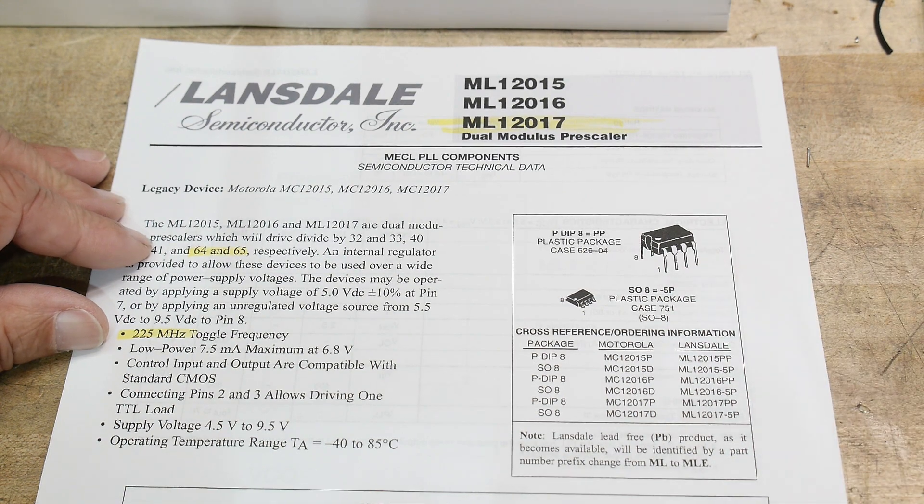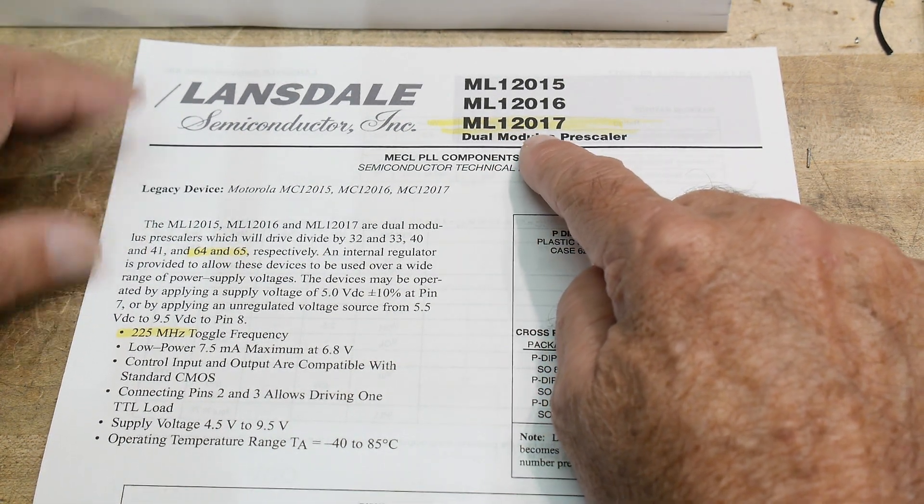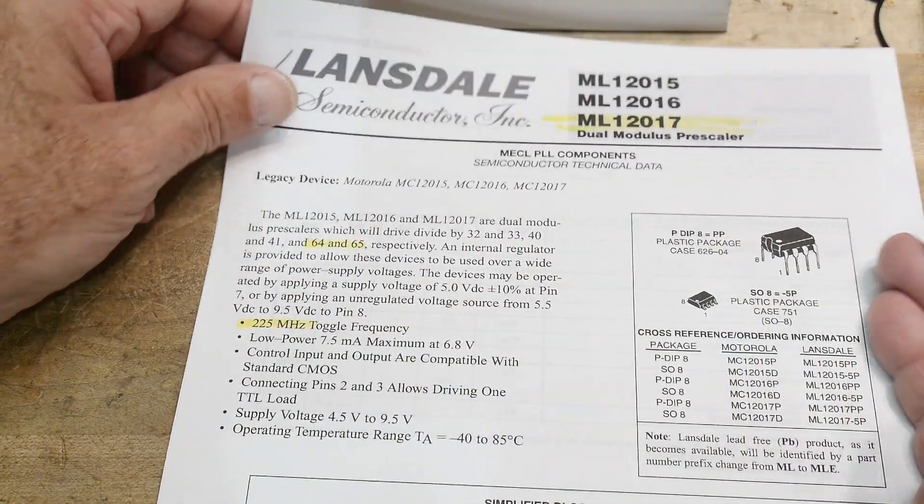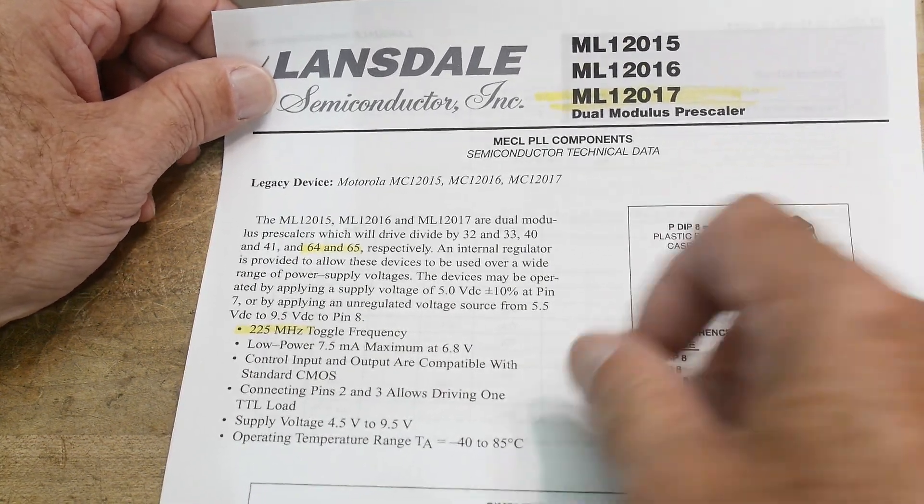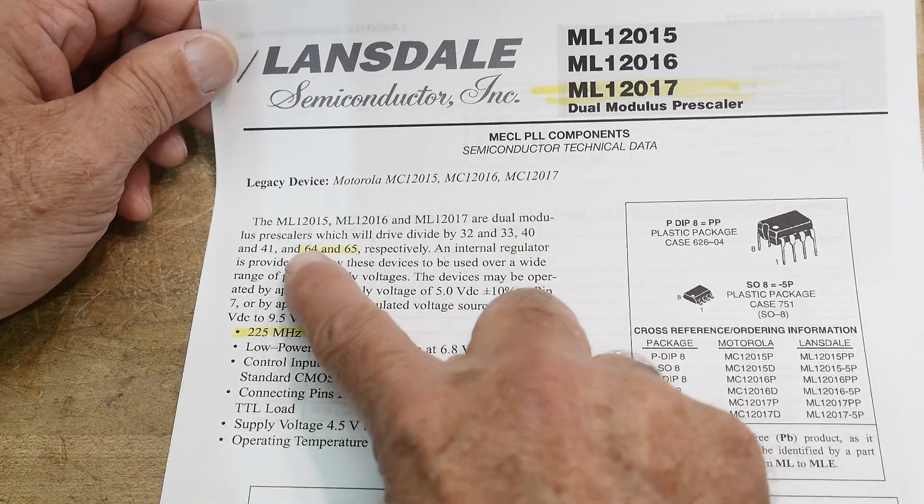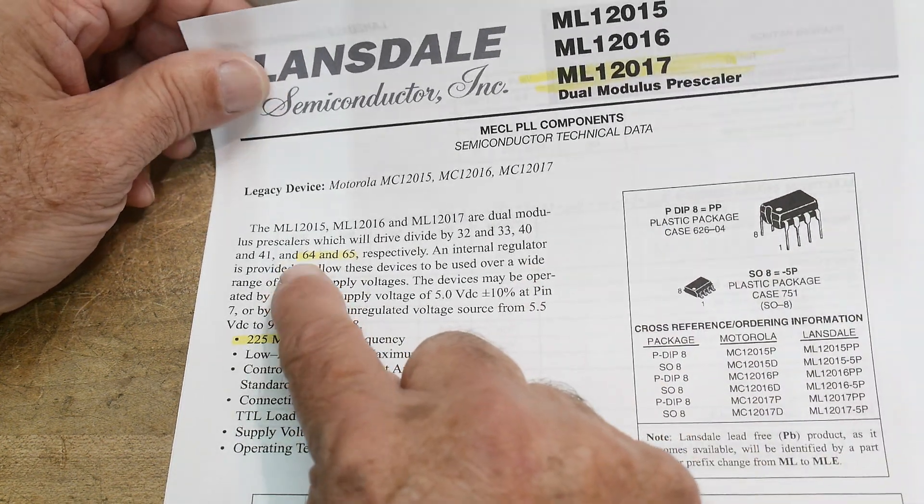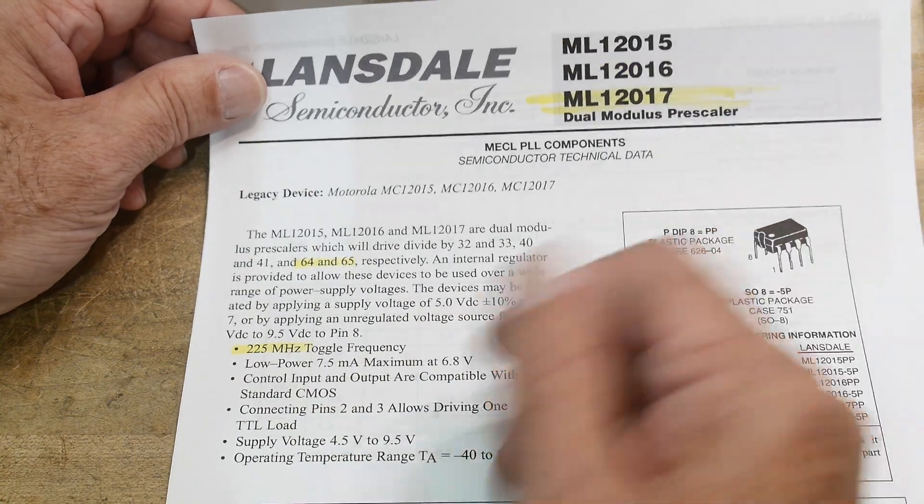So the one that we have is the 1217. So the difference is, so first of all, it's a pre-scaler. It is frequency in, it gets divided down, so it's a divider chip. And this particular one, there's a 30 divided by 32, divided by 40, and divided by 64. This is divided by 64, and it's actually either divided by 64 or divided by 65, depending on how you have it configured.